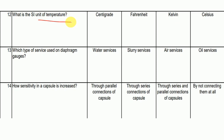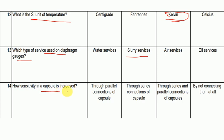The SI unit of temperature is equal to Kelvin — this is very important. Which type of service is the diaphragm gauge used in? Diaphragm gauge is used in slurry services. How can the sensitivity of capsules be increased? Through series connection of capsules.